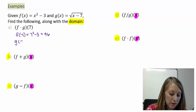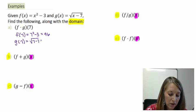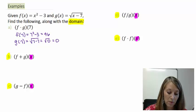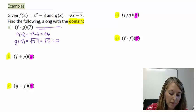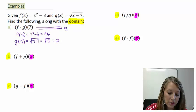I'm going to figure out what g of 7 is, which is square root of 7 minus 7, or square root of 0, which simplifies to be 0.